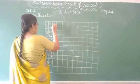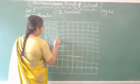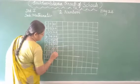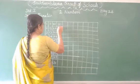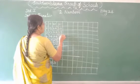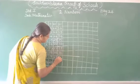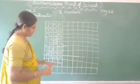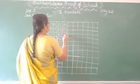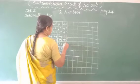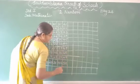Write neatly. 20, 21, 22, 23, 24, 25, 26, 27, 28, 29, 30. Next. 31, 32, 33, 34, 35, 36, 37, 38, 39, 40. 45, 46, 47, 48, 49, 50. Okay.